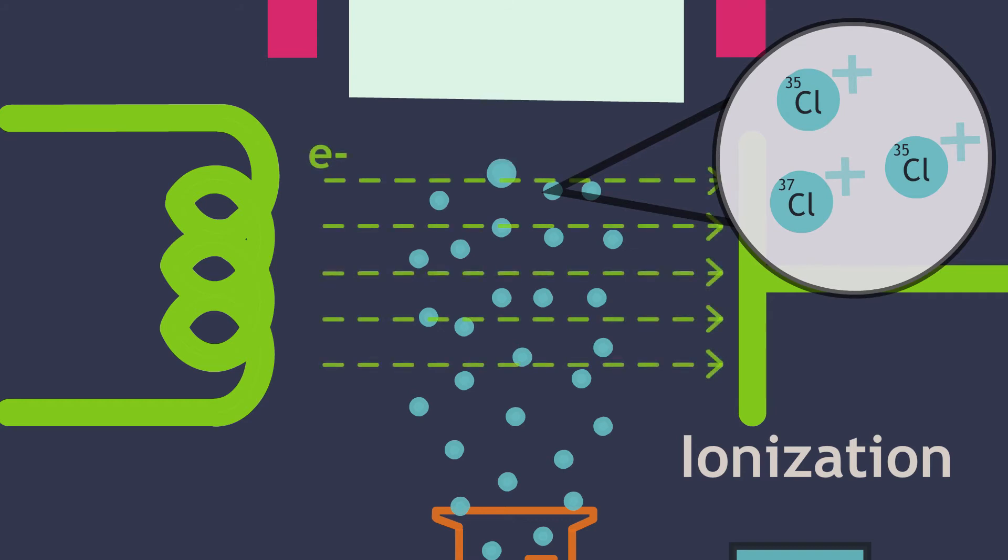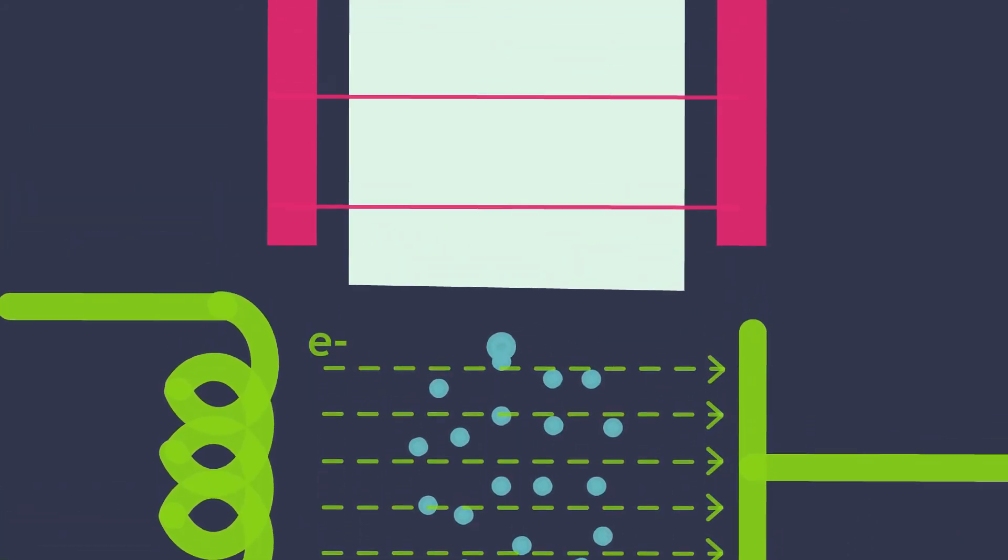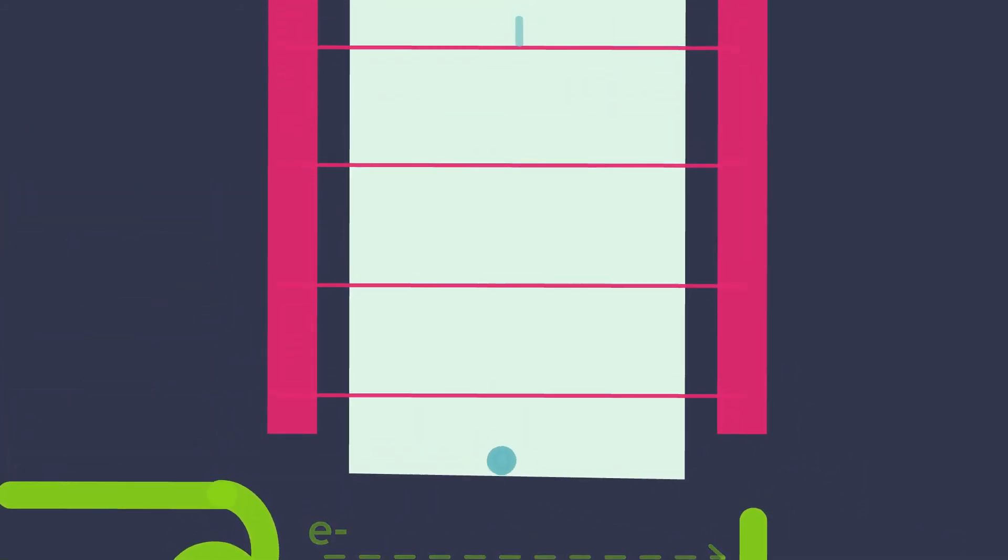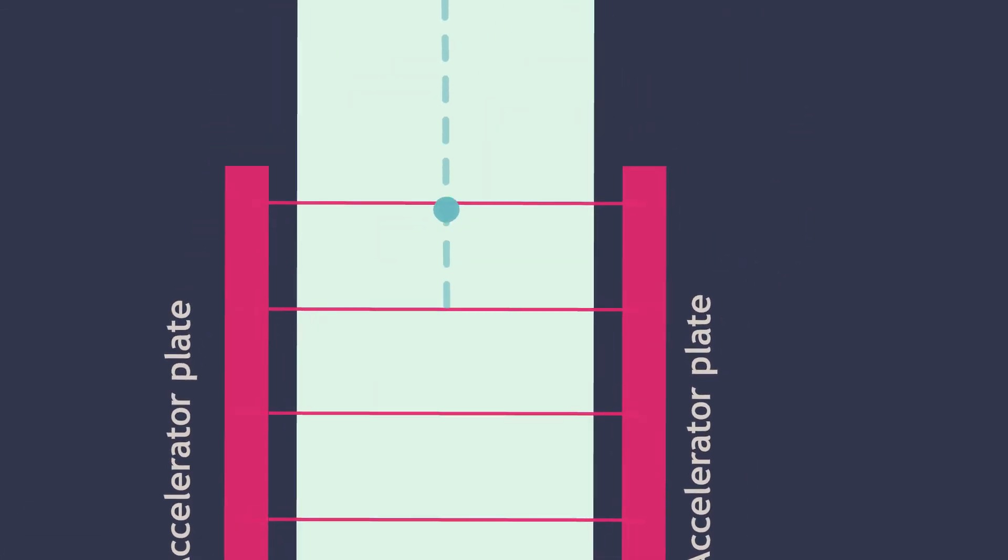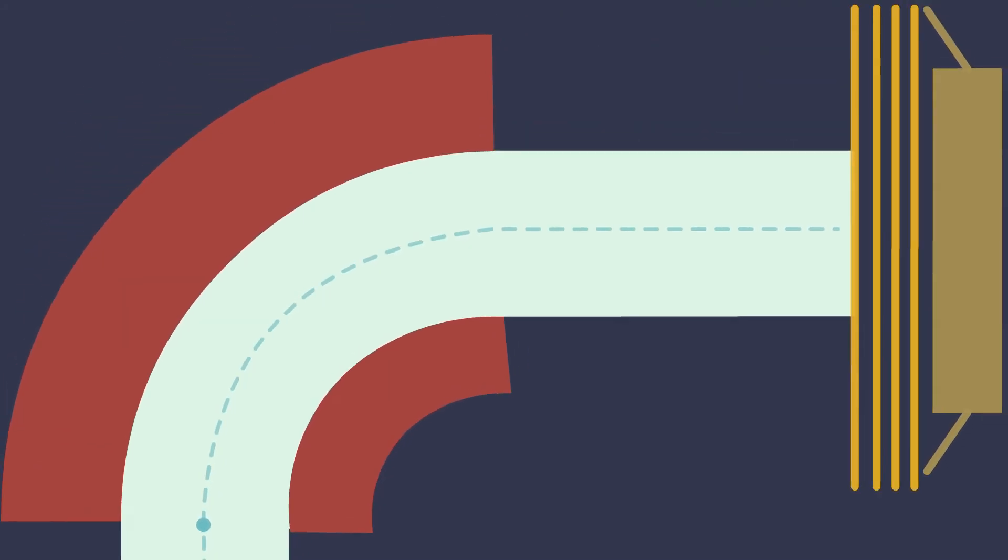Then, chlorine ions will pass through an electric field formed by two accelerator plates. This greatly increases their speed as well as focuses their path into a beam. Once the ions arrive at the magnet, their path will be deflected based on their specific mass-to-charge ratio.